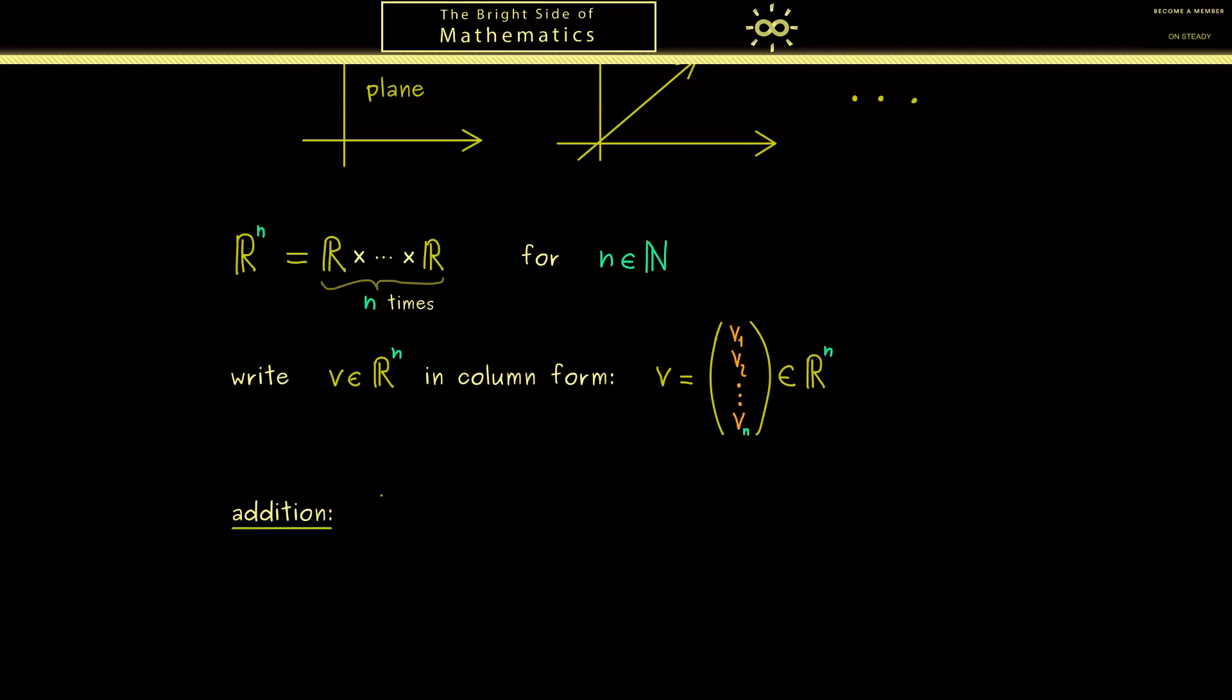Let's start with the addition, which should act between two vectors u and v. Therefore, let's write them in column form and let's use what we have learned in R^2. There we have seen that the addition of the components was a useful operation.